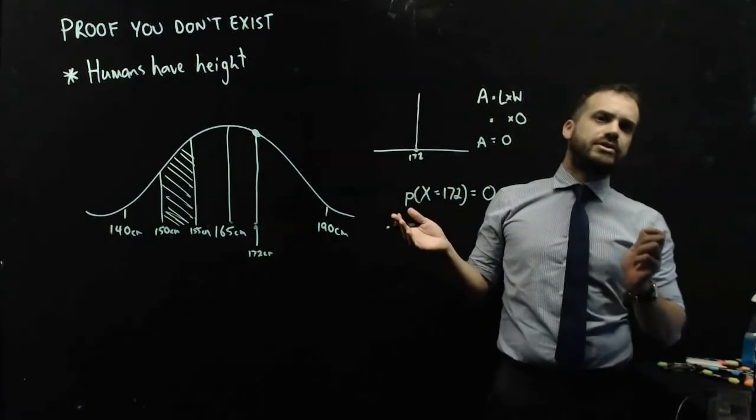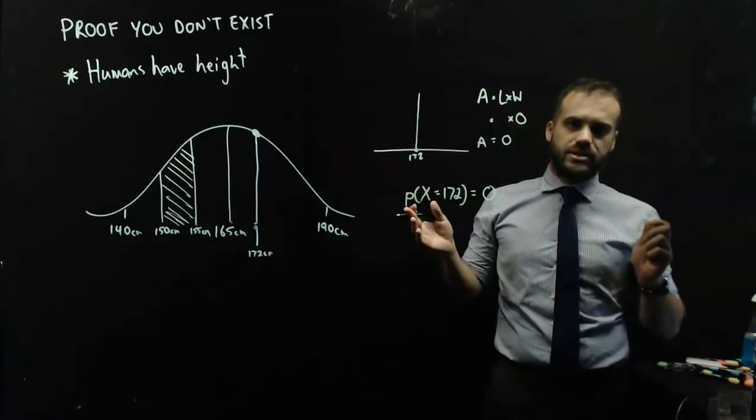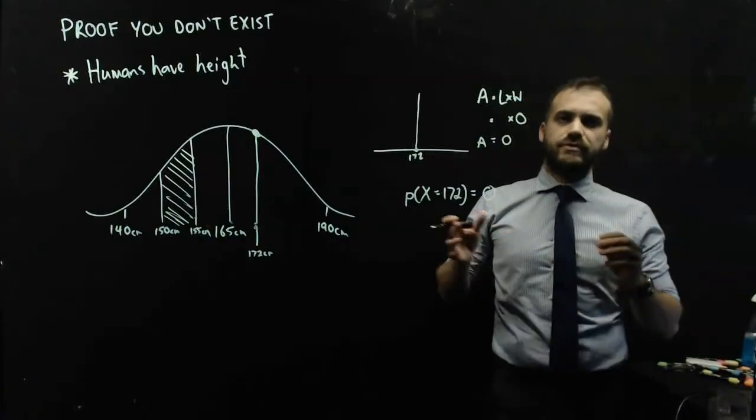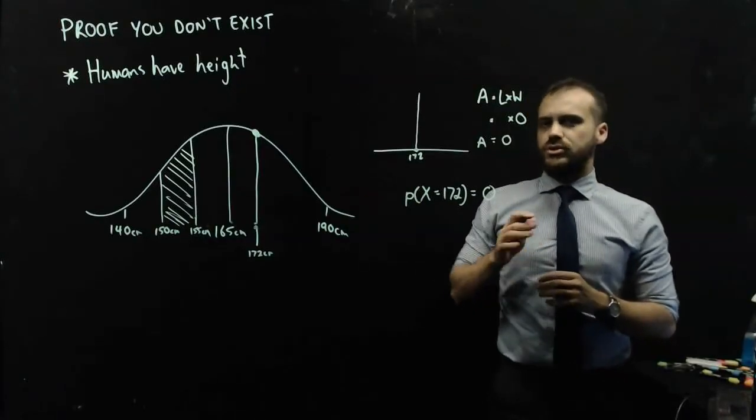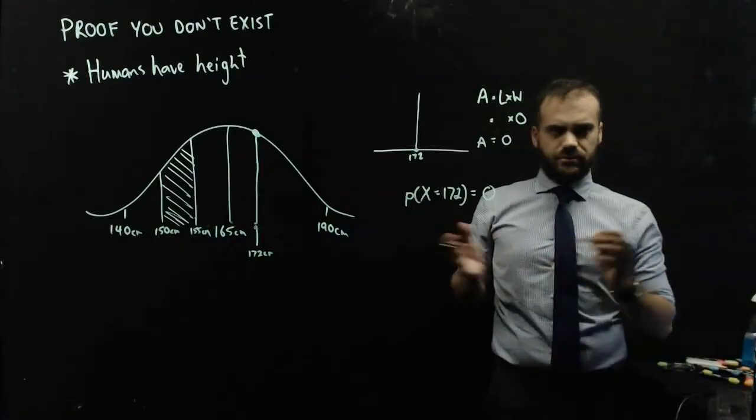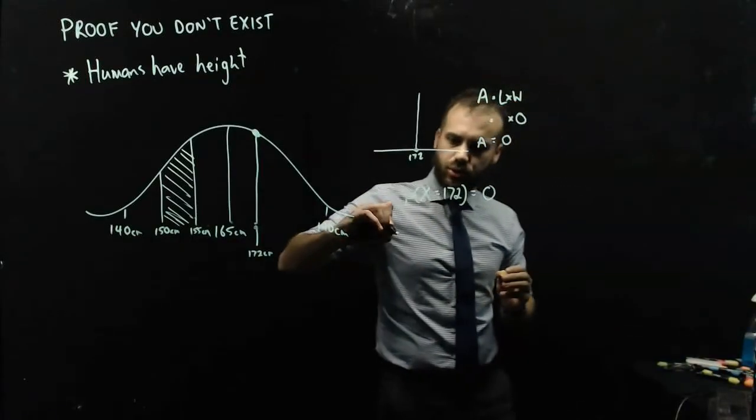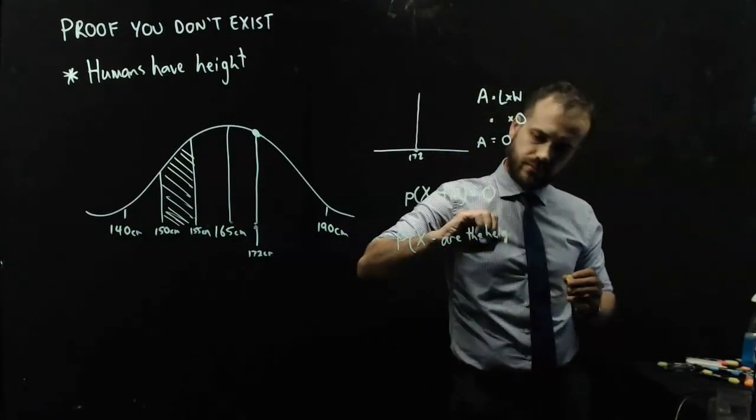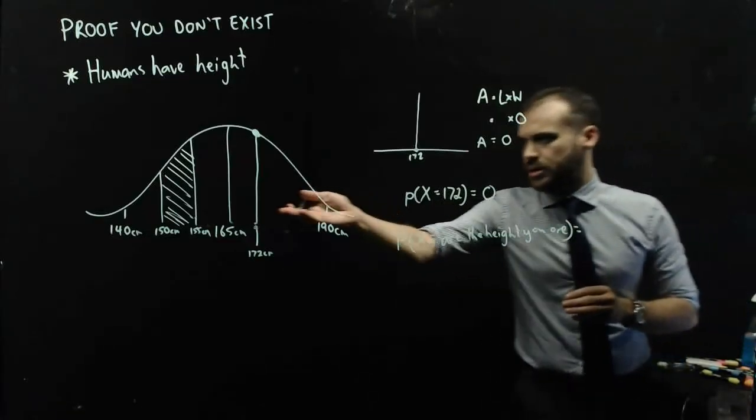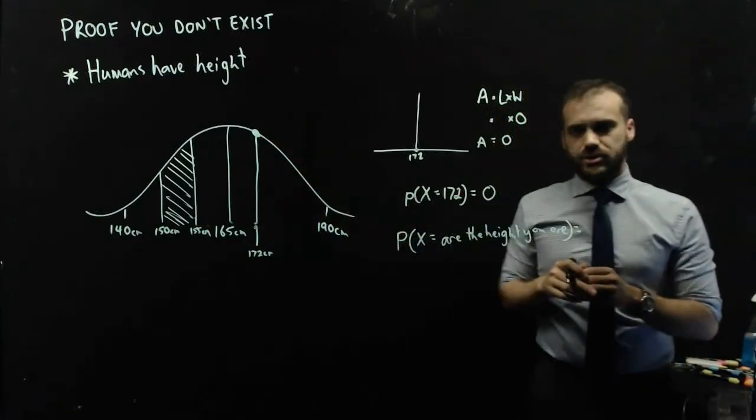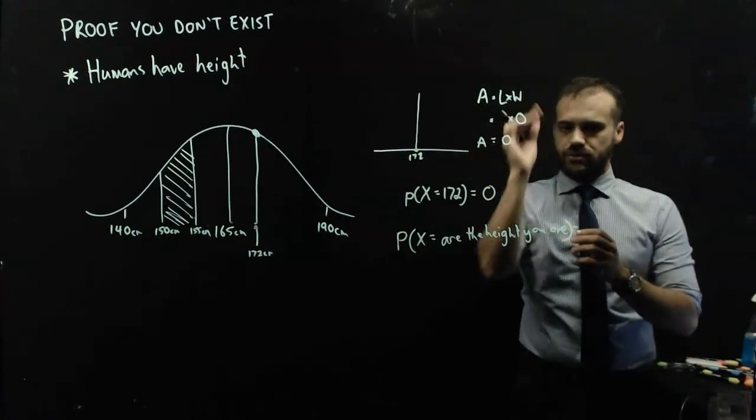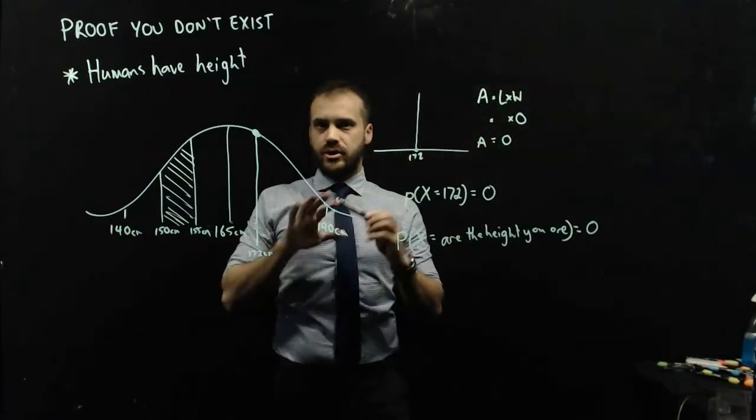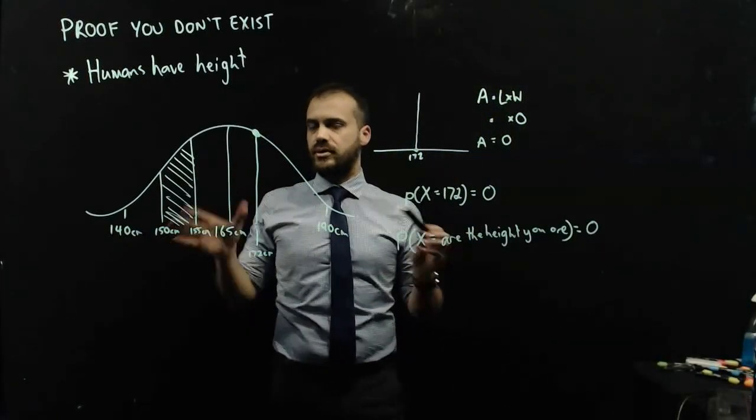And you might be saying to yourself, well, I'm not 172cm. I'm 164cm. I'm 152cm. Or I'm 152.359cm. Maybe you don't know your height, but you have a height, and the probability that you are the height you are, is equal to the height of our normal distribution times zero, which is zero. You have no height. Humans have height.